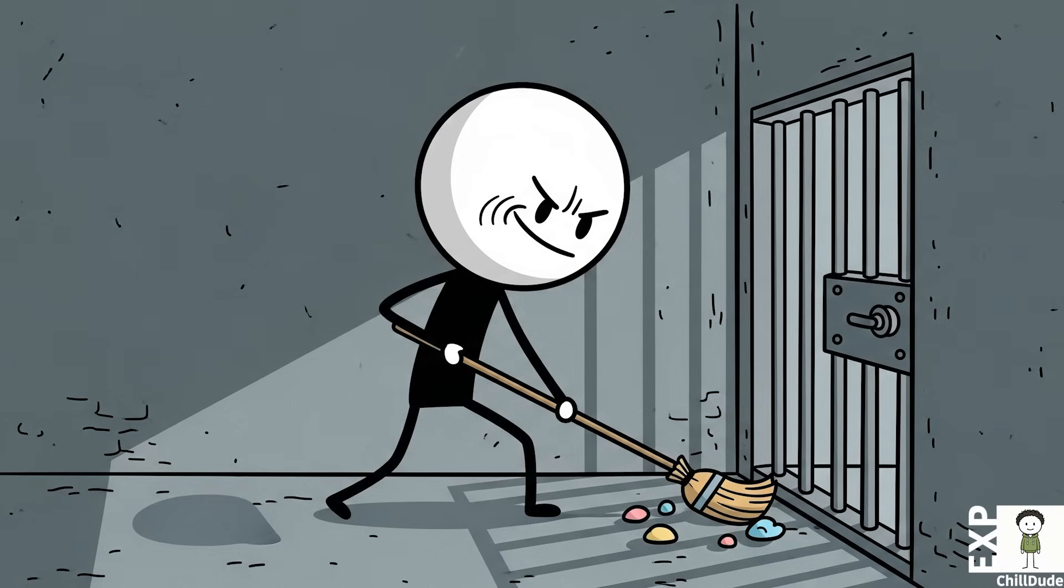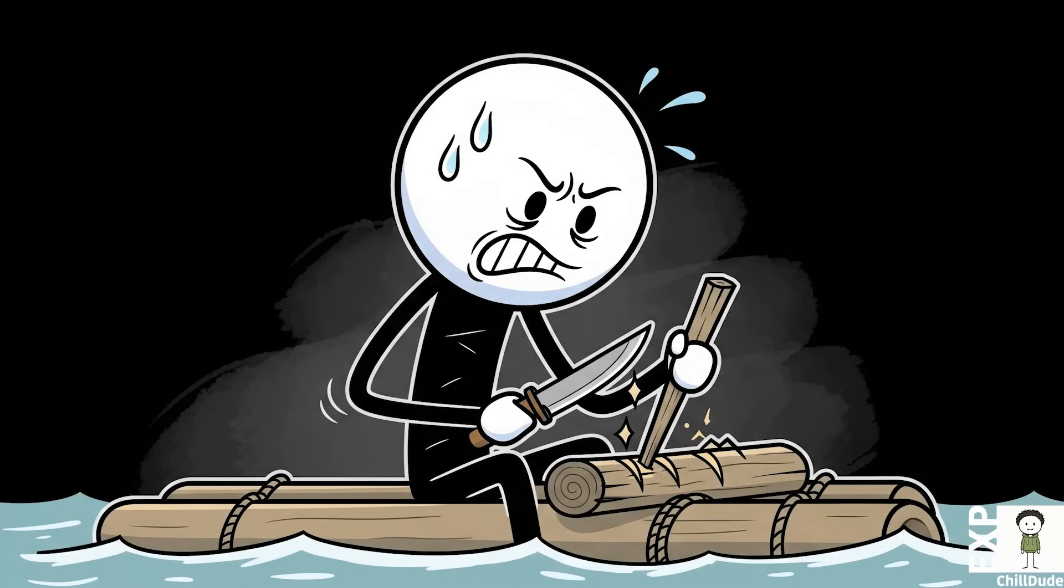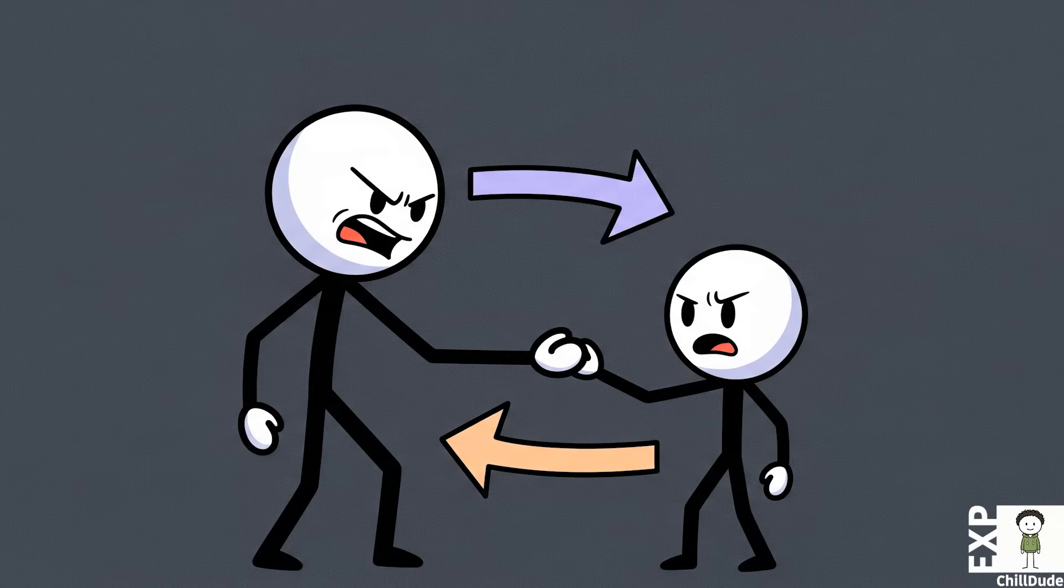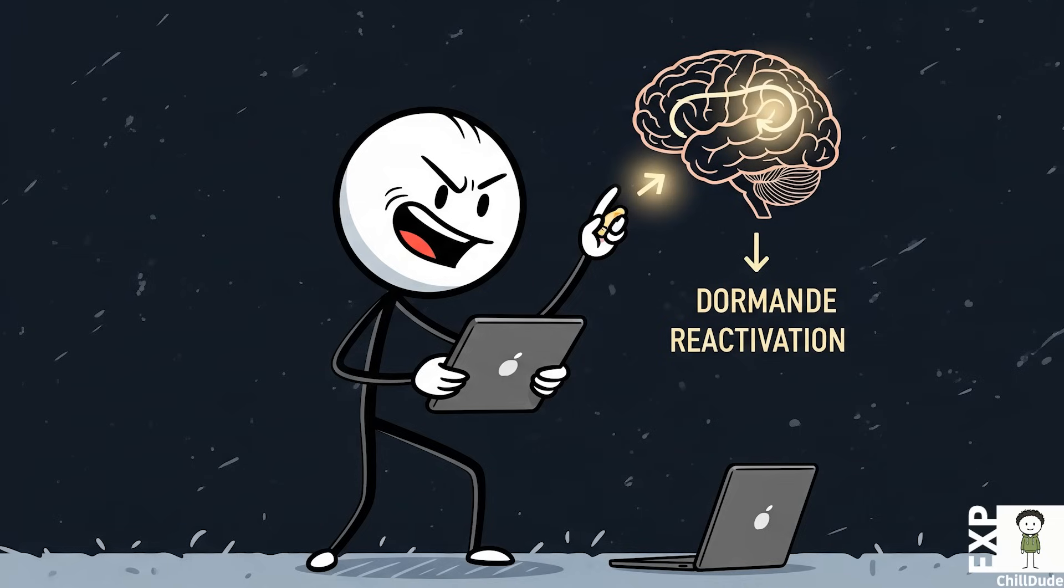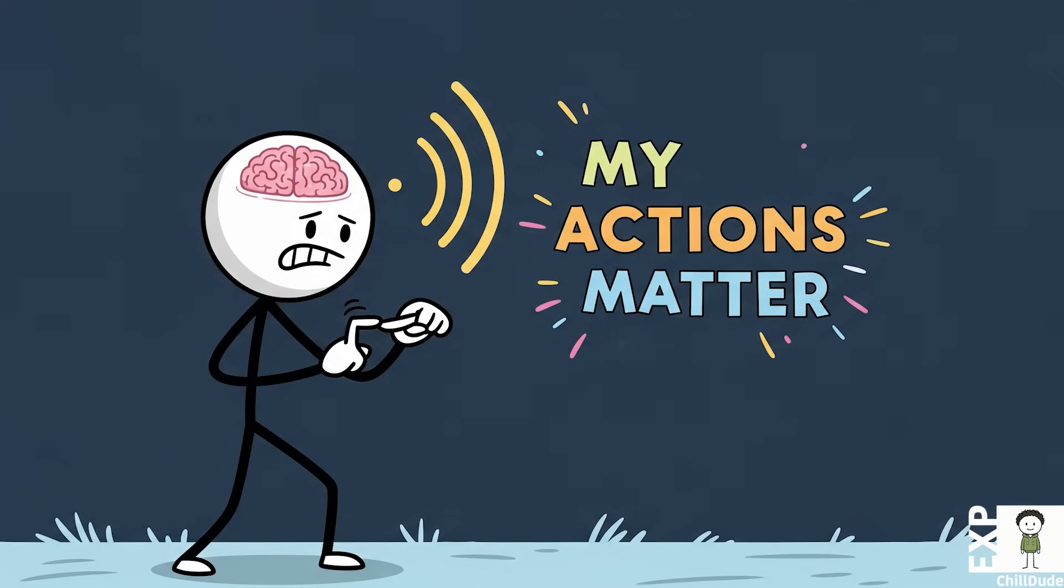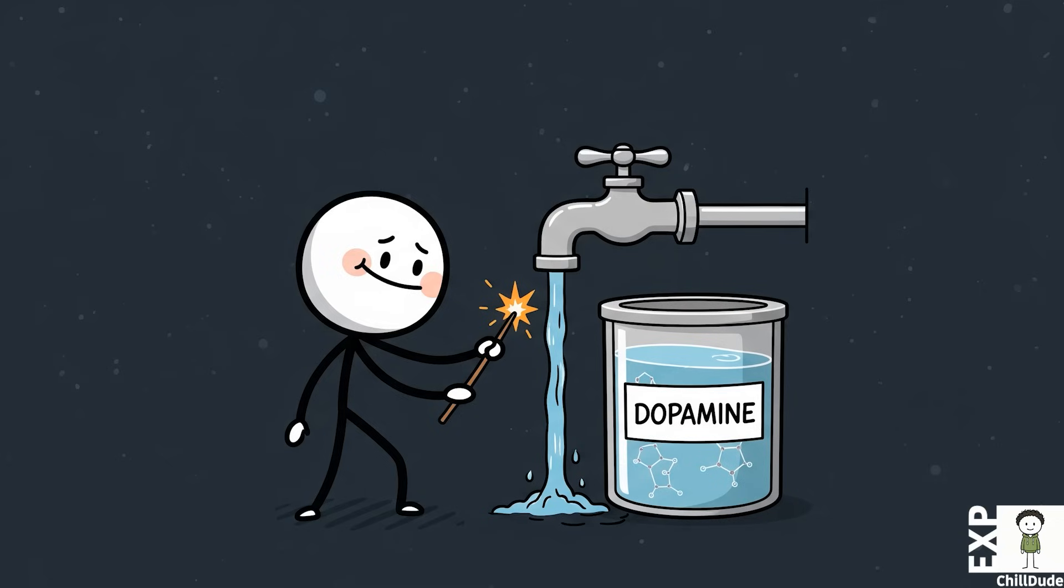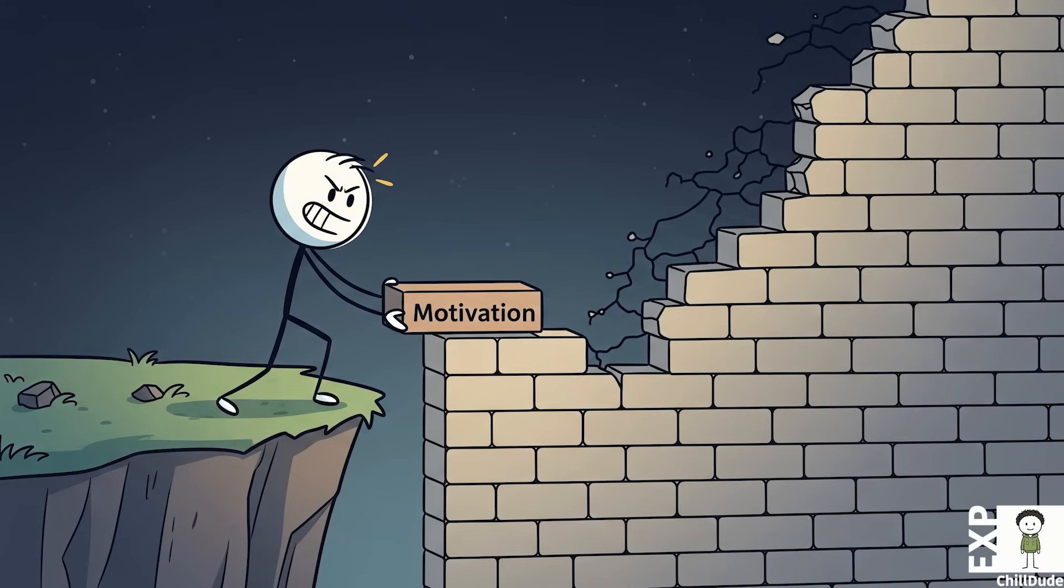For a prisoner, it might be the simple act of cleaning their tiny corner of a cell. For a shipwreck survivor, it could be fashioning a tool or mending a piece of cloth. Crucially, one of the most powerful ways to restore agency is to take an action that helps someone else. These small, purposeful tasks reboot the dormant circuits. They send a signal to the brain that says, my actions still matter. That signal is enough to restart the flow of dopamine, rebuilding motivation from the ground up, and pulling the individual back from the brink.